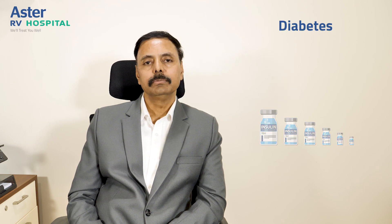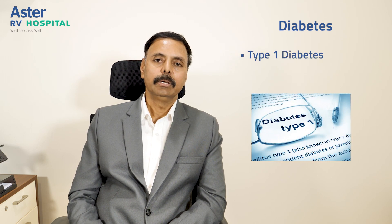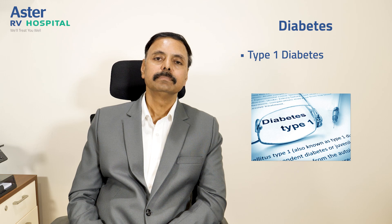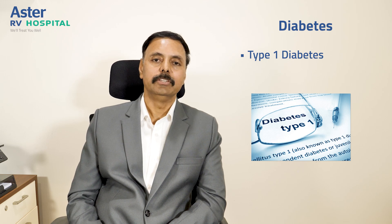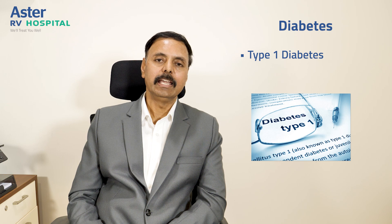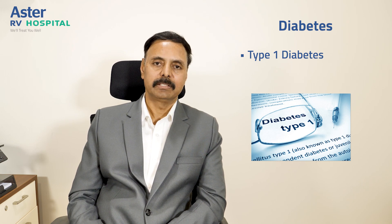Let us come to the types of diabetes. Type 1 diabetes usually happens in children and adolescents. However, it can happen at any age, but most commonly in children and adolescents. These patients have absolute deficiency of insulin. They need insulin treatment from the day we diagnose diabetes.